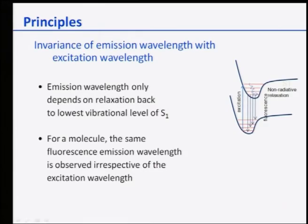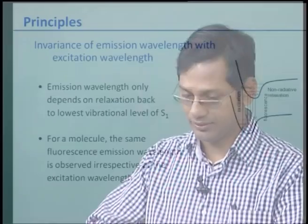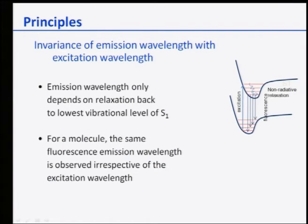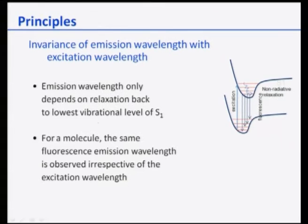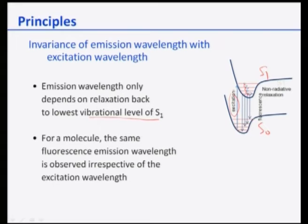The emission wavelength can also be invariant with excitation wavelength. Emission wavelength only depends on relaxation back to the lowest vibrational level of S₁. For a given molecule, the same fluorescence wavelength is observed regardless of the excitation wavelength. Once excited, the electron goes to the highest vibrational state of S₁ and the rest of the process takes place independently — this is called invariance of emission wavelength.